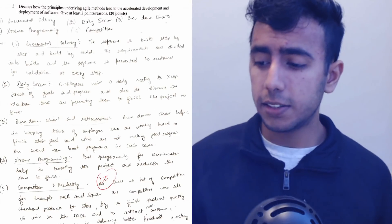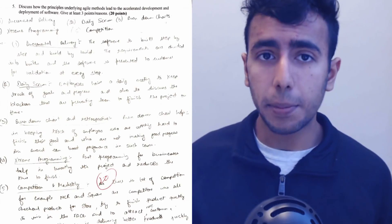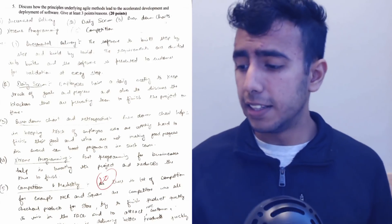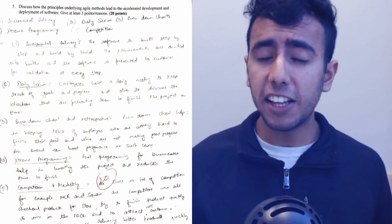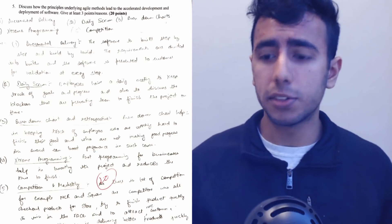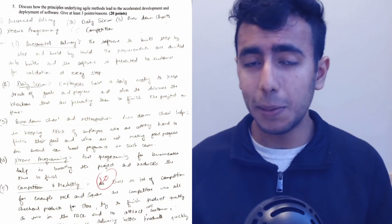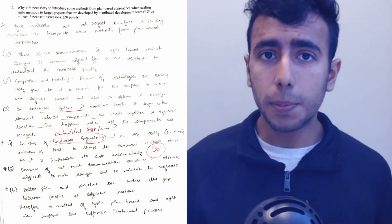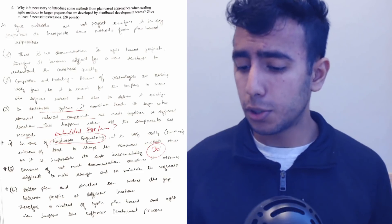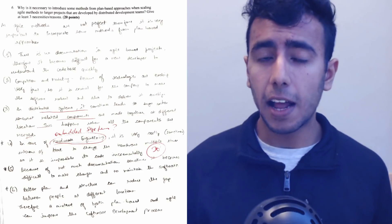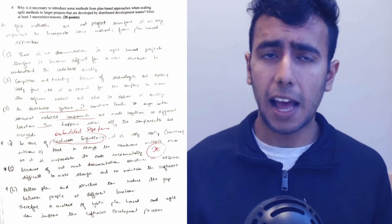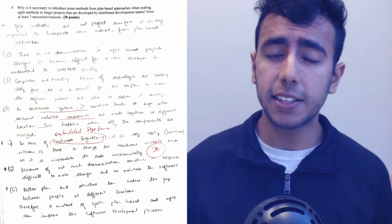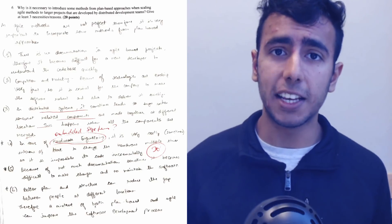Moving on to another question — this is a basic practice of scrum in a software engineering company. It's a very basic question and we all know about scrum properly. I was supposed to give only three points and I gave five good points. Last but not least, there was a very easy question on agile and why agile should use some plan-based methods. This is also situation-based and I have used these methods in a company as well.